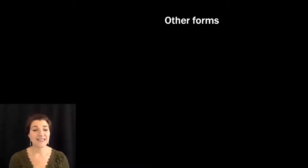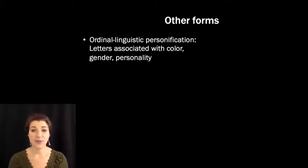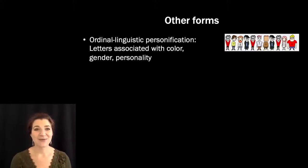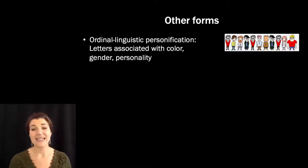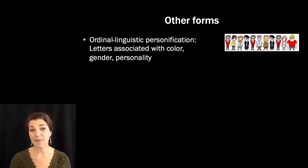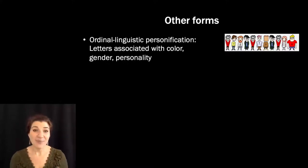Another form of synesthesia is called ordinal linguistic personification. In this form, letters are associated with personalities and human traits. Here's how one synesthete described numbers: 'Four is a warm, even-tempered, puppy dog kind of guy — a Labrador, if you will. He likes being outdoors and gives really good hugs. He recycles and rides bikes but isn't all up in your face about it. Eight is a mom. She's stable, plump, even-tempered, caring, and generally happy. She and number two are besties.' Ordinal linguistic personification synesthetes really have these complex characters associated with letters and sometimes numbers as well.